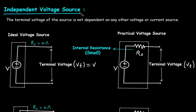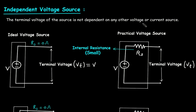Independent voltage source: the terminal voltage of the source is not dependent on any other voltage or current source. It is called an independent voltage source. The terminal voltage of the source is not dependent on any other voltage or current source, so this is an independent voltage source.